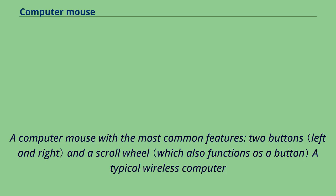Computer mouse with the most common features: two buttons and a scroll wheel — a typical wireless computer mouse.